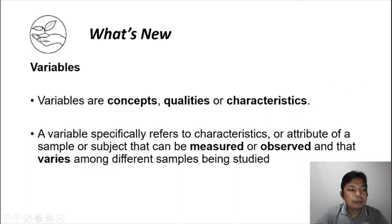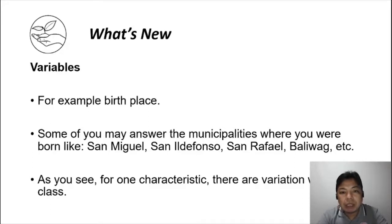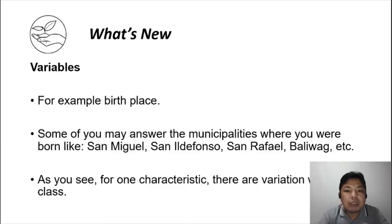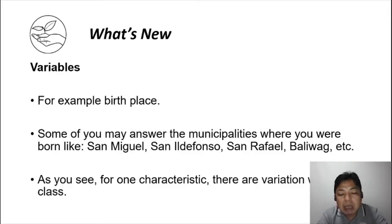Variables are concepts and attributes that we measure that can vary from one subject or one sample to another. For example, if you measure birthplace, some people may answer that they were born in San Miguel, San Rafael, Balewal, and so on. For one characteristic, there are variations within a group. Sample A will have a different variable measurement from sample B or sample C — so it varies.